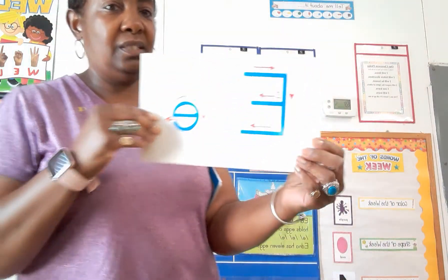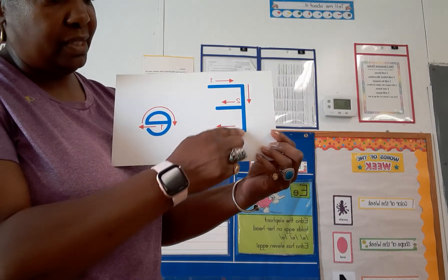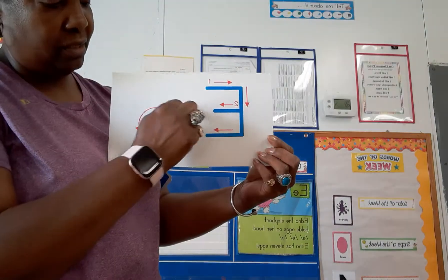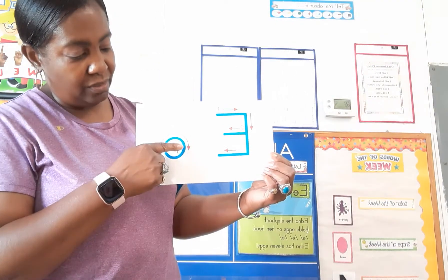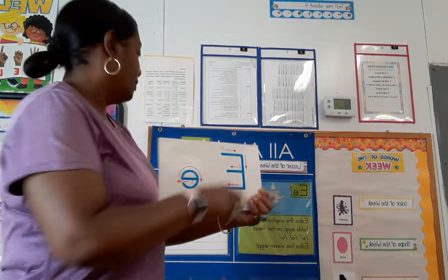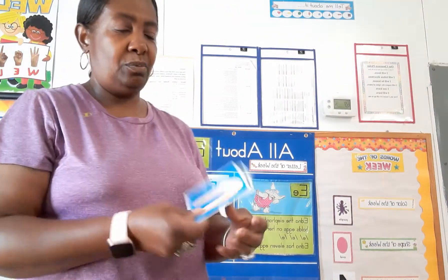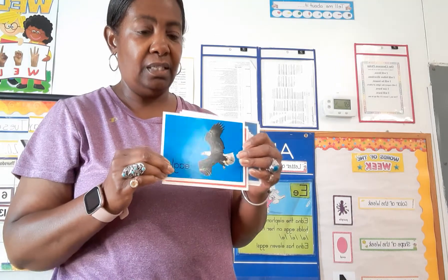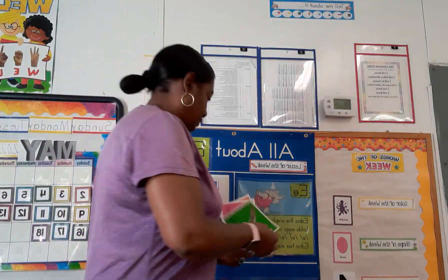To write the uppercase E, we go across, all the way down, go back across, and across in the middle. For the lowercase e, come out and go around. The words that begin with E are: eagle, eggs, envelope, and elephant.